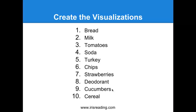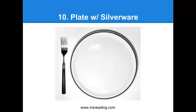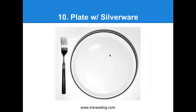Ten, we have to remember cereal. Ten is a plate and silverware. We can picture this as a bowl — but I want you to exaggerate the size. Let's imagine a giant bowl, almost like Alice in Wonderland where everything is exaggerated and huge. Picture this giant bowl with giant corn flakes falling from the sky — pieces of cereal falling into this bowl from the sky. That's how we're going to remember number ten being the plate with silverware.